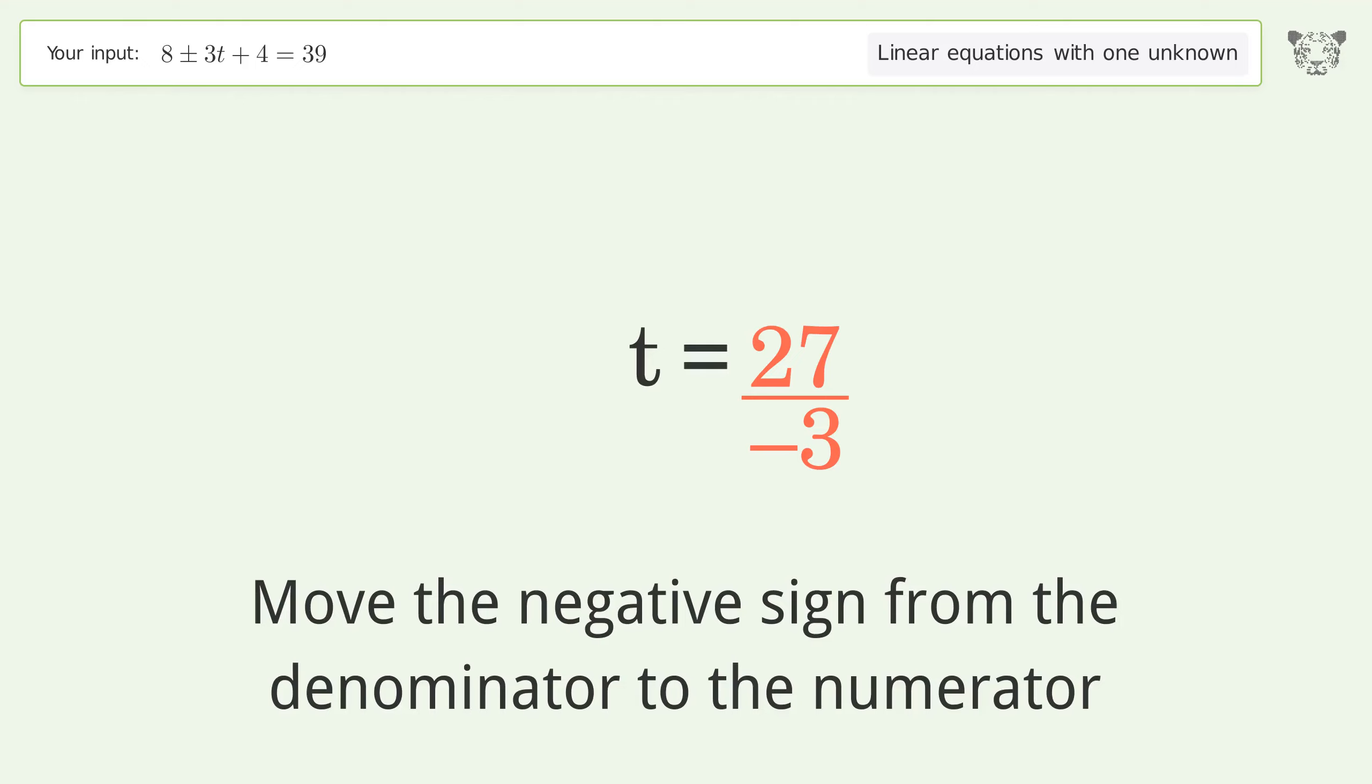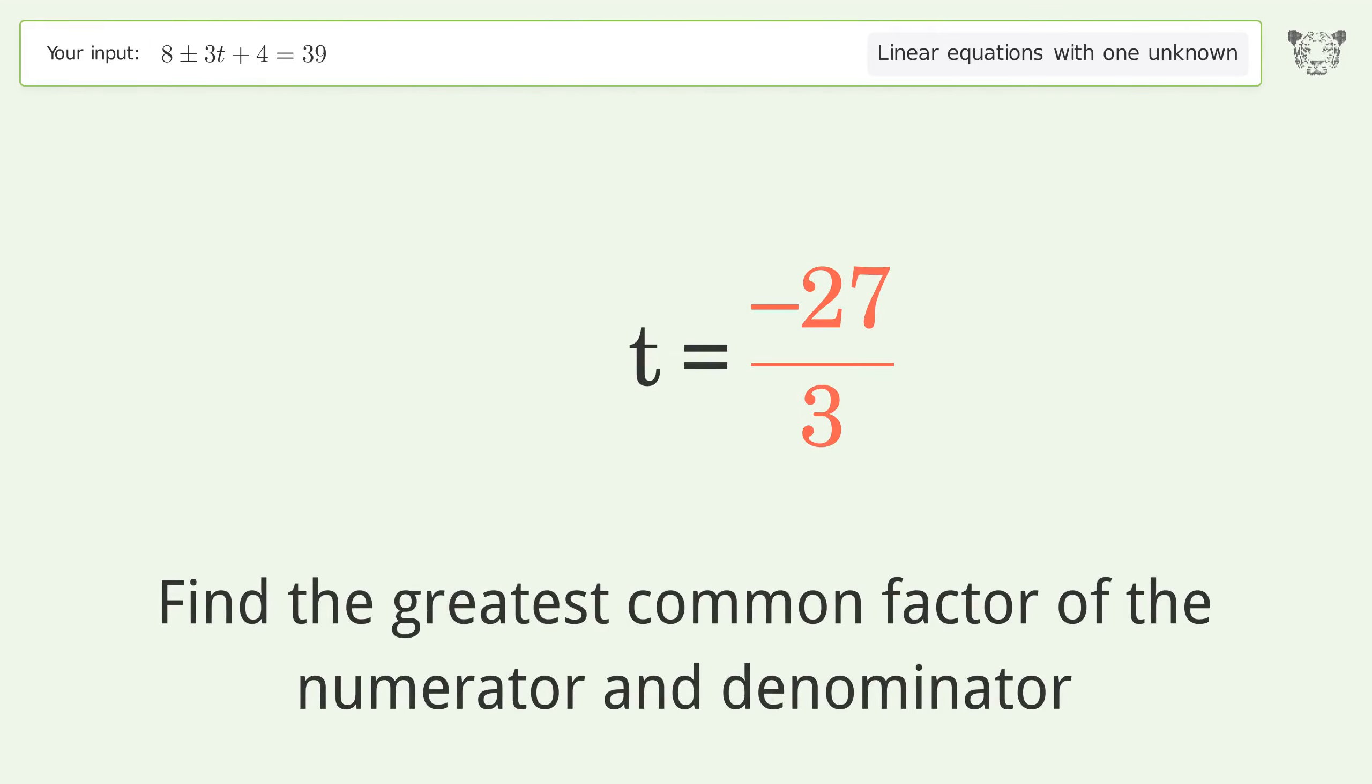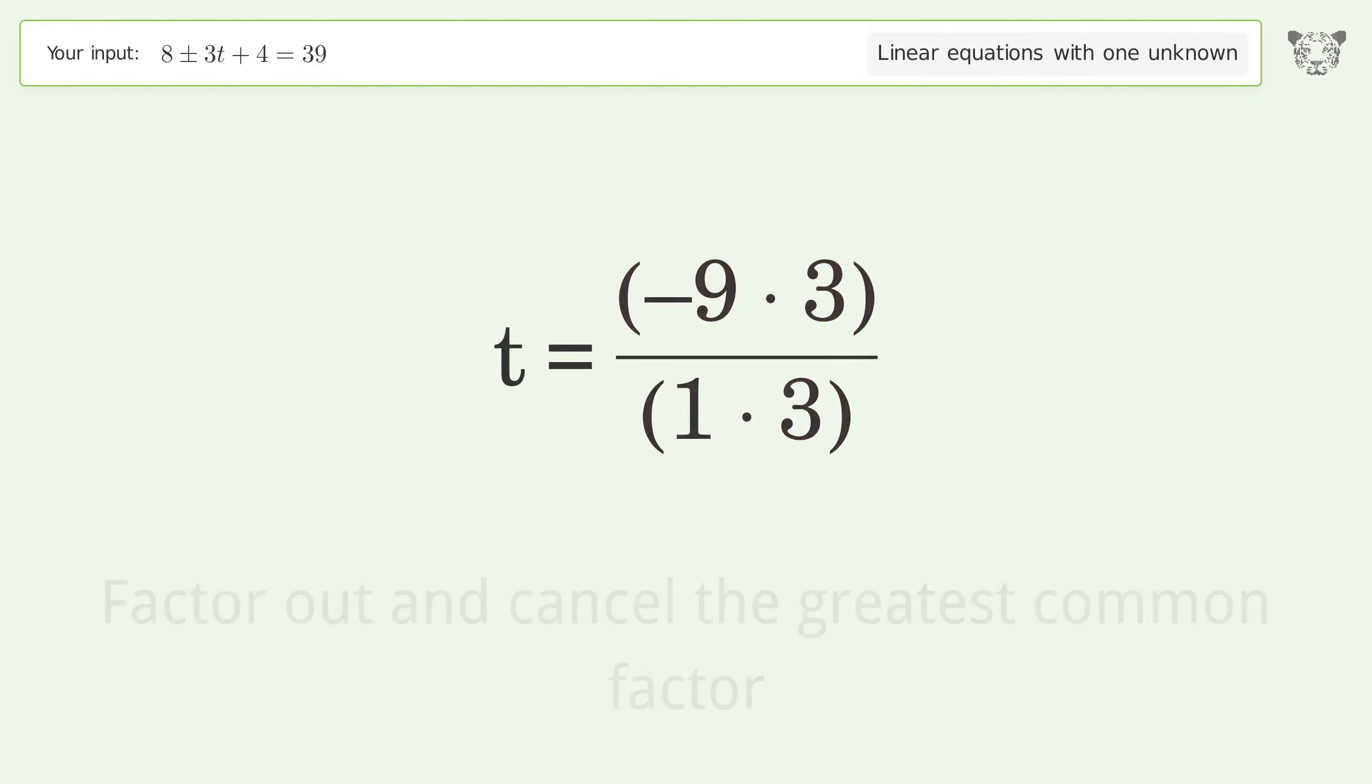Move the negative sign from the denominator to the numerator. Find the greatest common factor of the numerator and denominator. Factor out and cancel the greatest common factor.